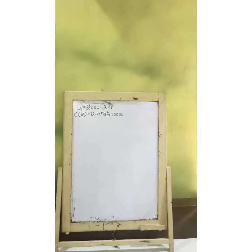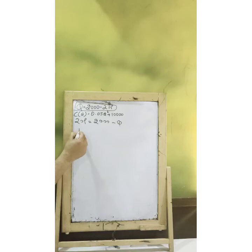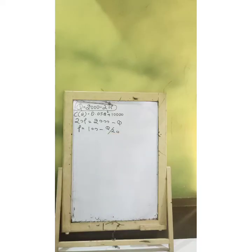We have one more numerical for you. In this numerical, we have Q as 2000 minus 20P and we also have a cost function. Now, if you want to solve equilibrium quantity, it is always handy that you convert this function into terms of price. So this shall look something like this — now you have this as a price function.